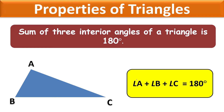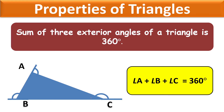Properties of a triangle. The first property is that the sum of the three interior angles of a triangle is 180 degrees — angle A, angle B, and angle C must sum to 180 degrees. The second property is that the sum of the three exterior angles of a triangle must be 360 degrees.